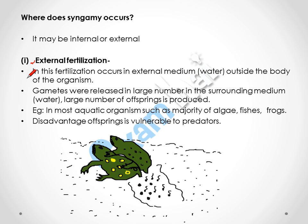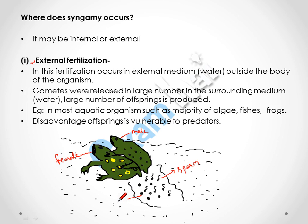The zygote formed is outside the body of the female organism. In this diagram you can see a male frog and a female frog — both release their gametes into the surrounding water. The sperm and ova fuse to form the zygote. However, the disadvantage is that the offspring is vulnerable to predators, as the zygote is freely floating in the water and can be eaten by other organisms like fishes.